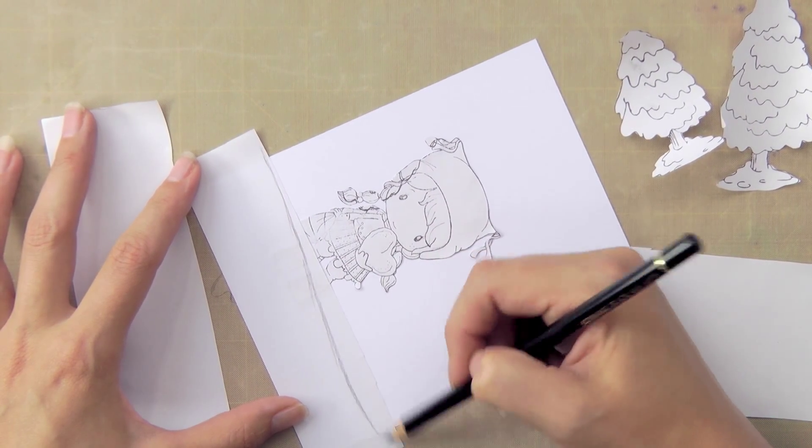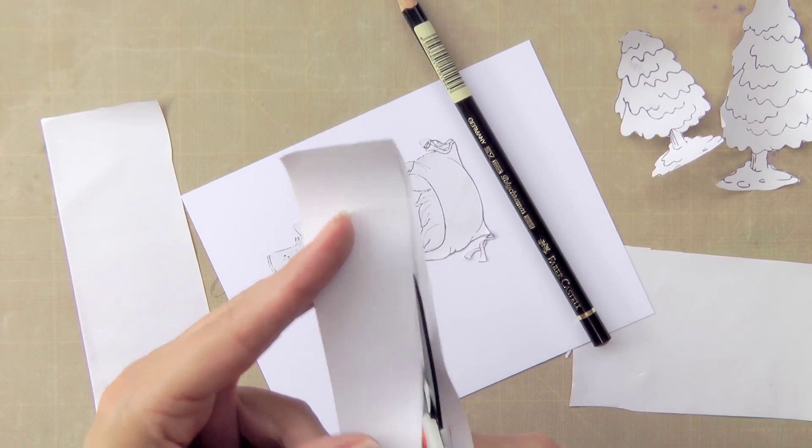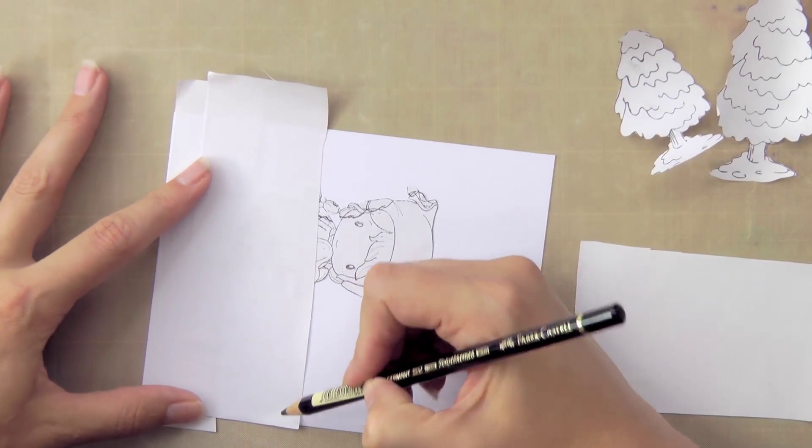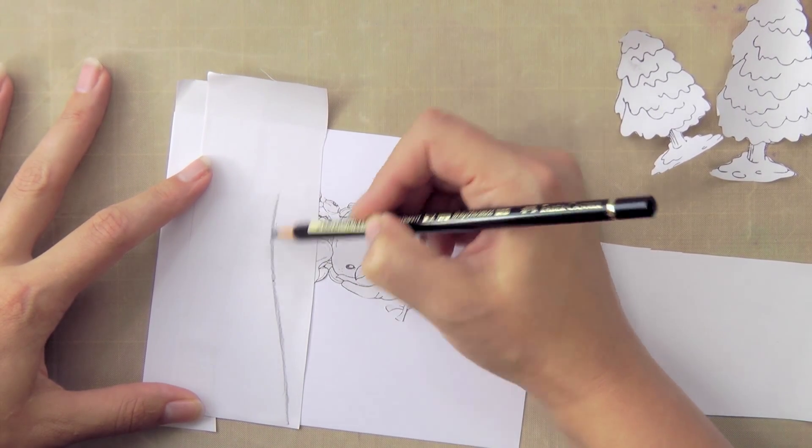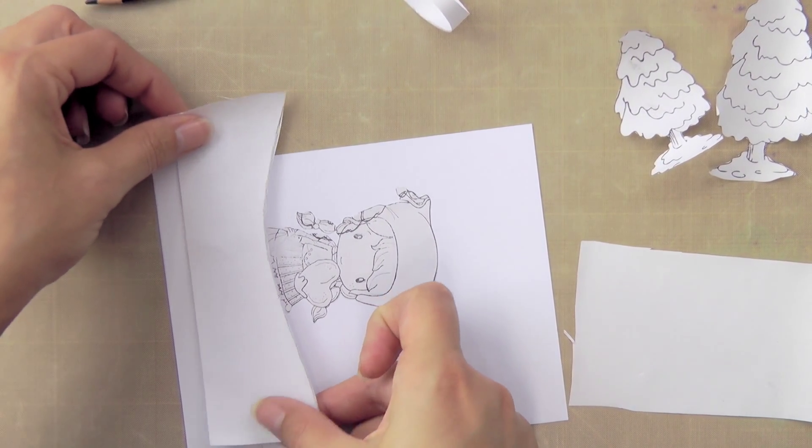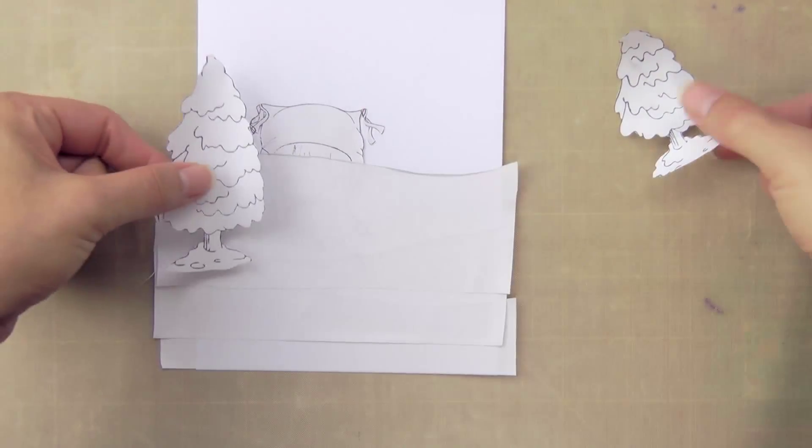So now I'm going to start creating the snow slopes. I'm placing one of those pieces that we cut earlier and I'm just drawing on a rough snow slope and I'm going to cut that out. So I'm going to do that with all 3 pieces and as I said before you could actually just use copy paper to do this and just add a little bit of tacky glue on the back.